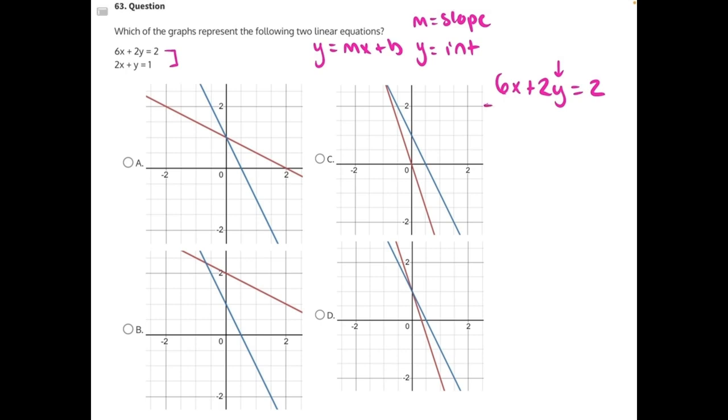6x is positive, so we need to do the opposite and subtract it from both sides. This will cancel, leaving us with 2y equals negative 6x plus 2.